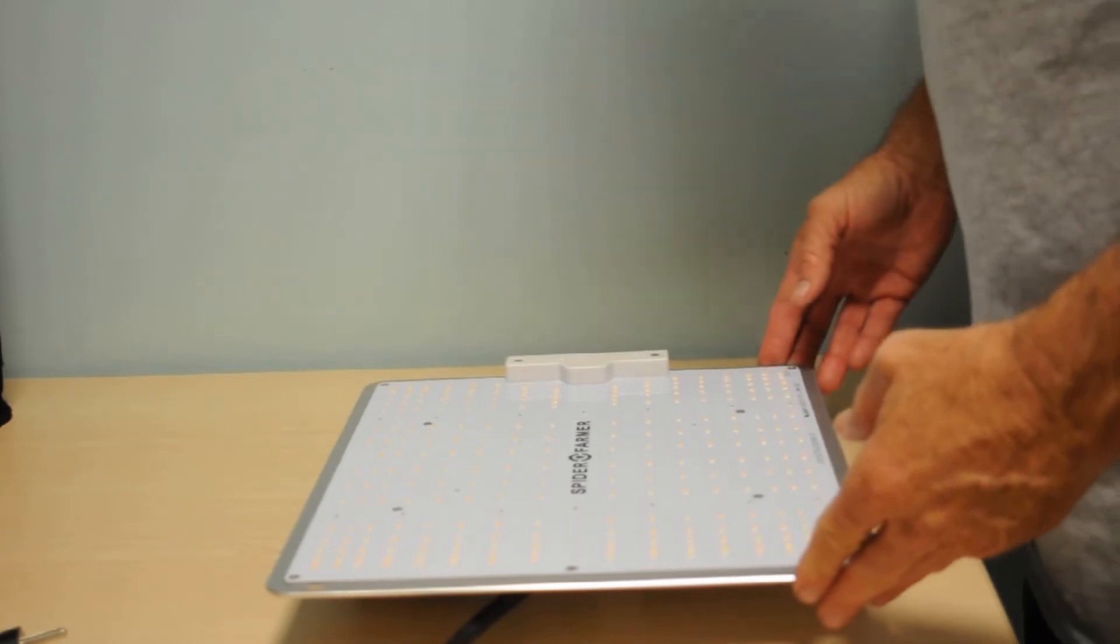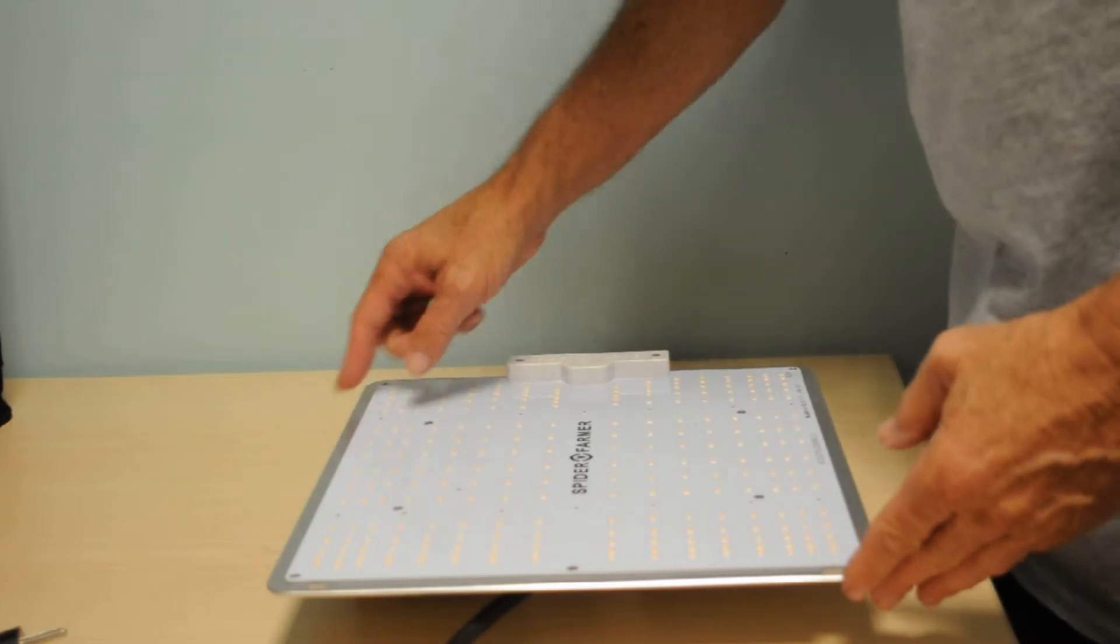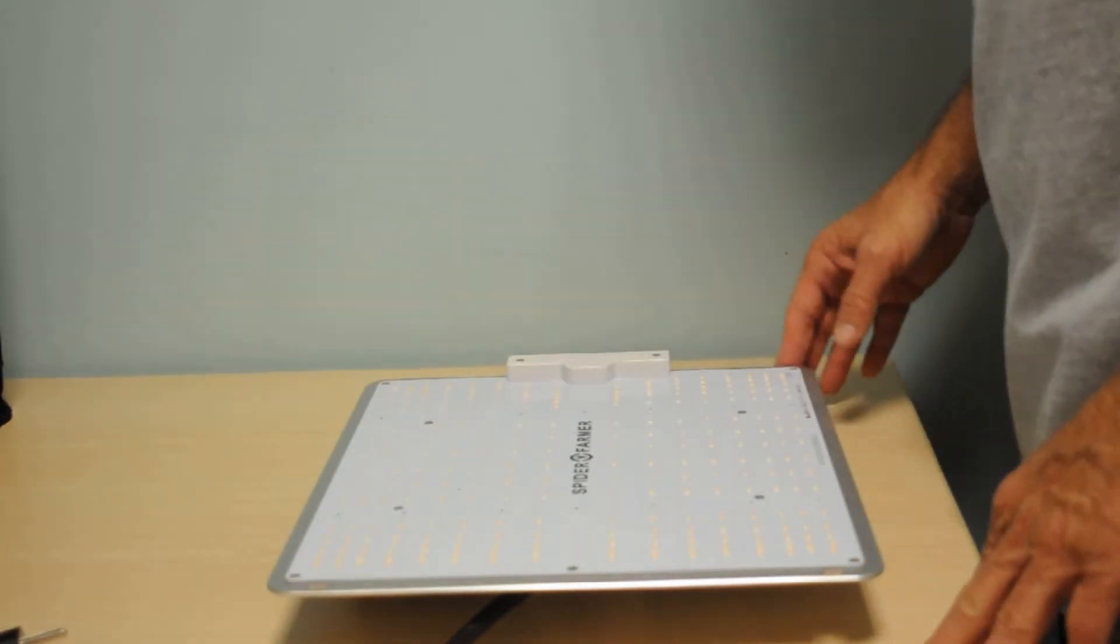Before we head over to the test chamber, we'll do a quick visual inspection. We want to check out the equipment and any extra accessories that the light might have. All right, so here is the Spider Farmer SF-1000, brand spanking new right out of the box. The light uses quantum board technology. It has a 12-inch by 10.5-inch quantum board with 270 LEDs.